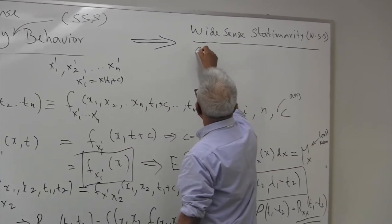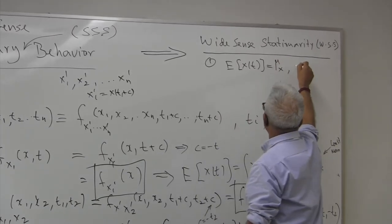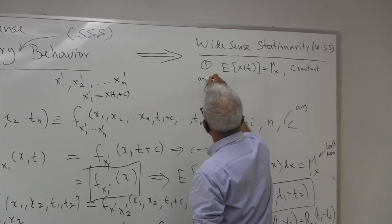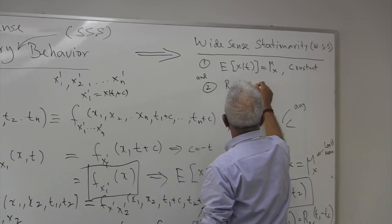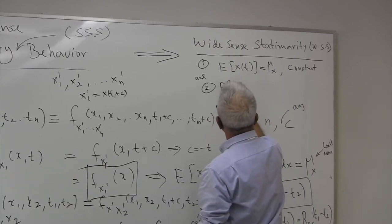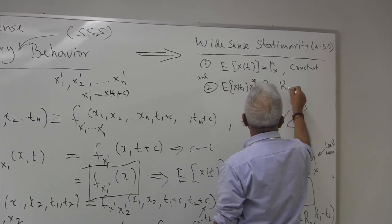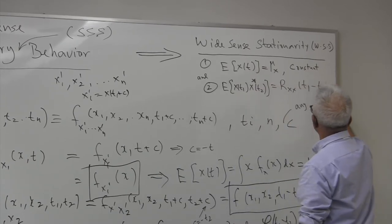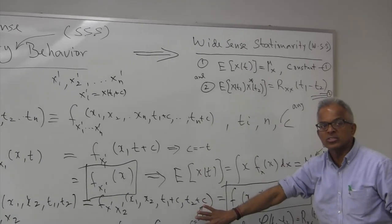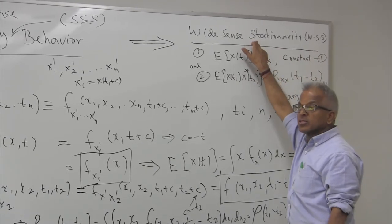Wide sense stationary: we don't bother with the density function; we just say that a process is wide sense stationary if the mean is a constant and the autocorrelation function is only a function of t1 minus t2. So we look for these two properties. We are not going to look at the density function — just these two properties. If these two properties are true, we call it a wide sense stationary process.